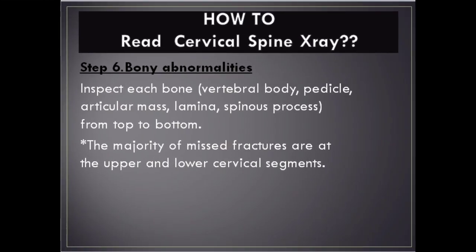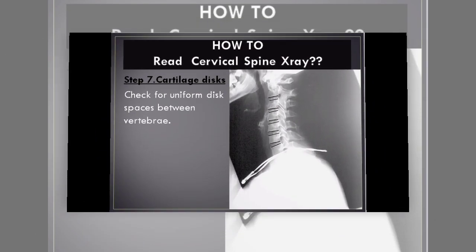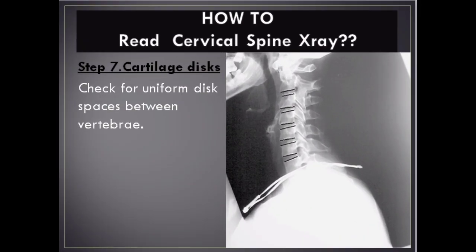Step 6 – Bony Abnormalities: Inspect each bone — vertebral body, pedicle, articular mass, lamina, and spinous process — from top to bottom. The majority of missed fractures are at the upper and lower cervical segments.